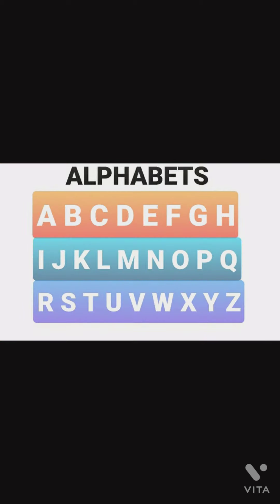Now, here you might have been hearing the song of alphabets, that is A, B, C, D, E, F, G, H, I, J, K, L, M, N, O, P, Q, R, S, T, U, V, W, X, Y, and Z. These are 26 alphabets of English.